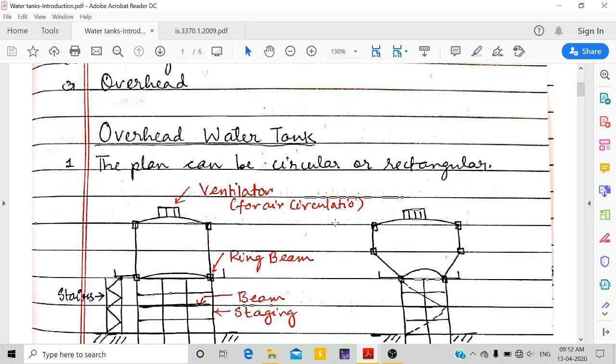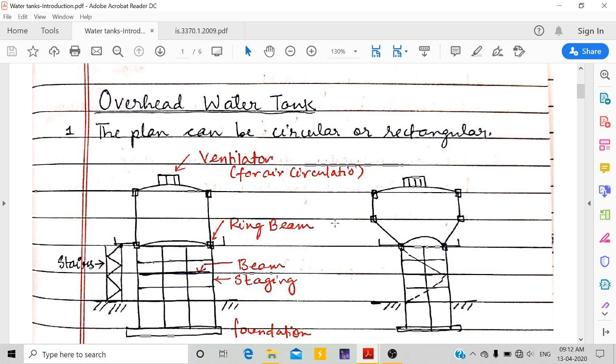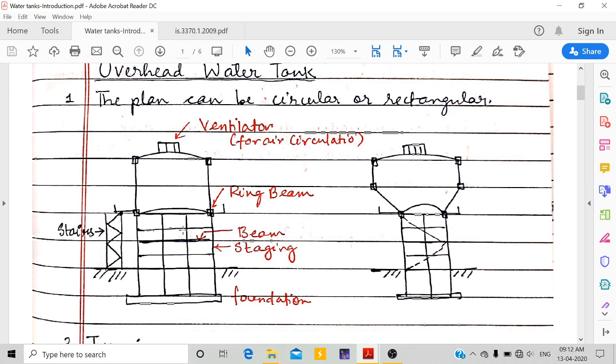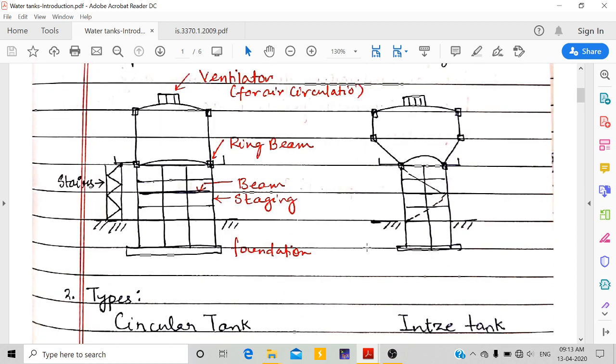This is an example of an overhead water tank. The plan can be circular or rectangular. This water tank is a circular example, and this is an inch tank. You can see there are four columns. This is a ring beam, meaning circular type beams. This is the dome shape - the top dome, bottom dome, and the cylindrical vertical wall.